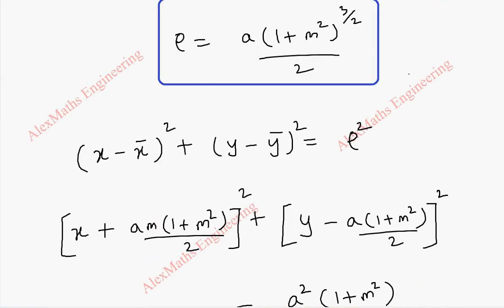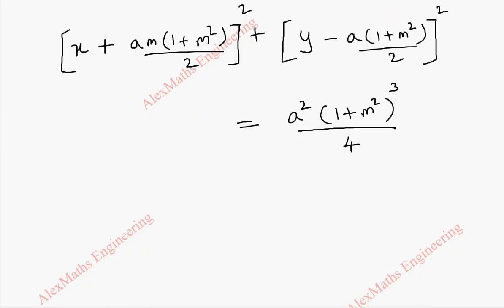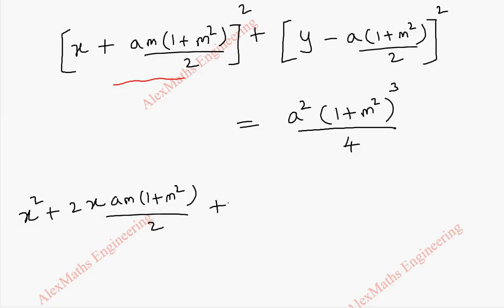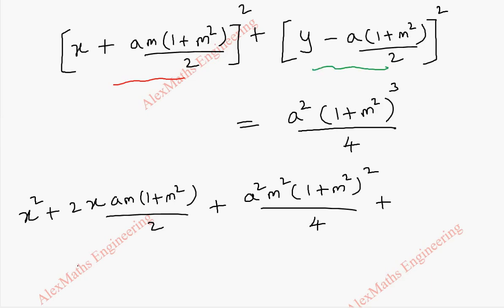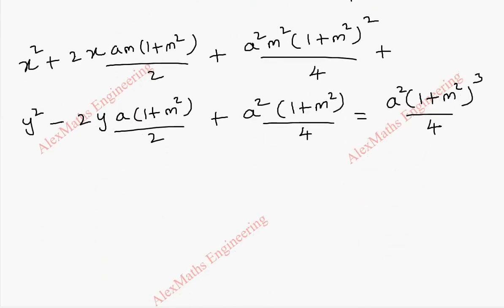So (y minus ȳ)² equal to rho squared. When we square rho, the result directly is a²(1 plus m²)³ divided by 4, because squaring (1 plus m²)^(3/2) gives (1 plus m²)³, and 2 squared gives 4. Now we expand using the (a plus b)² formula, which is a² plus 2ab plus b². So we get a²m²(1 plus m²)² divided by 4, plus y² minus 2ya(1 plus m²) divided by 2, plus a²(1 plus m²)² divided by 4, equal to a²(1 plus m²)³ divided by 4. Now we keep x² plus y² together.